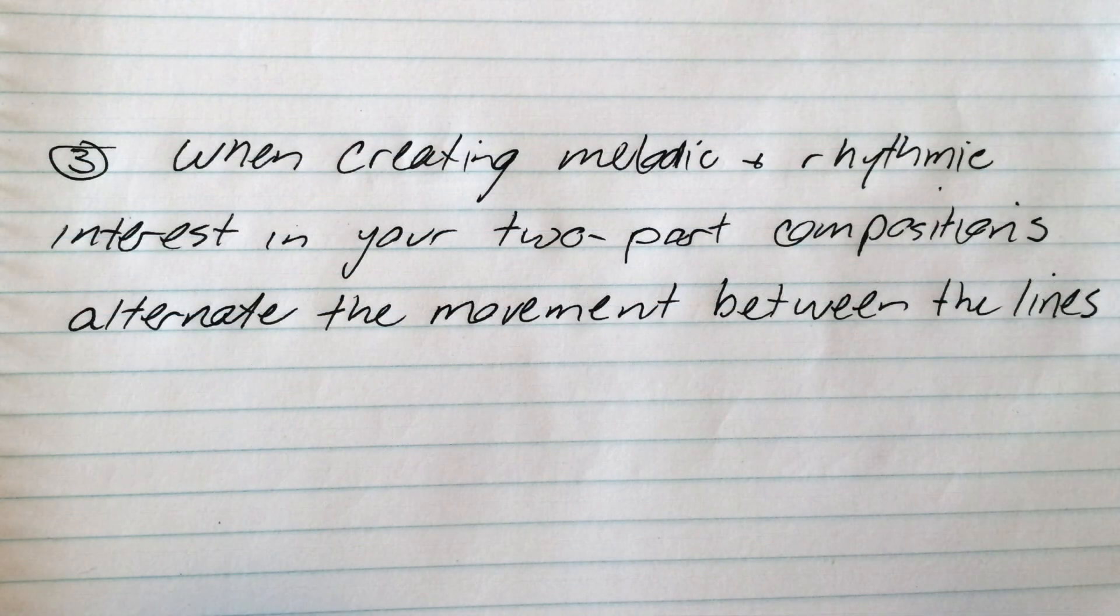And finally, number three: when creating melodic and rhythmic interest in your two-part compositions, alternate the movement between the lines. Do not have movement on top of movement. And of course, create movement by using passing notes, auxiliary notes, and other chord notes.